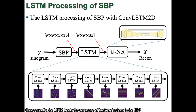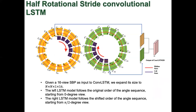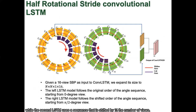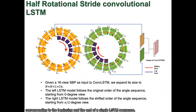The LSTM treats the sequence of back-projections in the SDP like a sequence of temporal views of progressively varying angles. Slide 9 shows how we implement a half-rotational stride with LSTM processing. These two LSTMs have the same structure. However, the first LSTM uses the original order sequence, while the second LSTM uses a sequence that is shifted by half the number of views. This is done so that artifacts are not produced at the view angles corresponding to the beginning and the end of a single LSTM sequence.